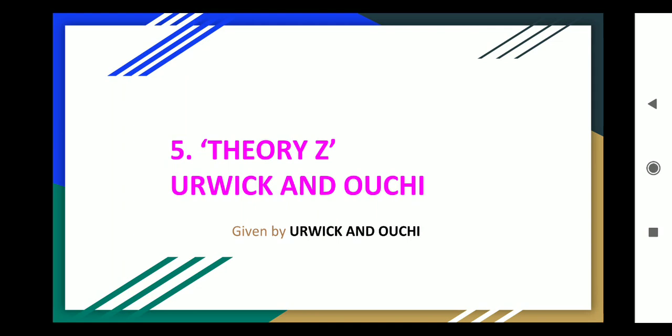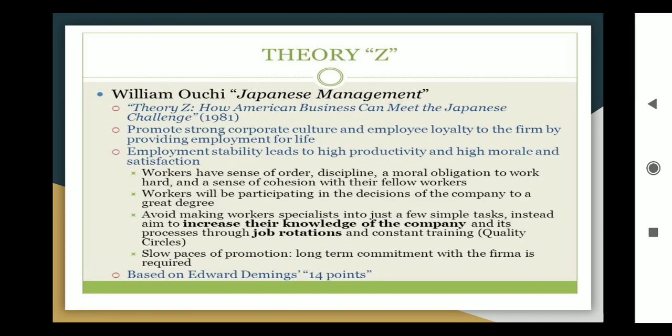Theory Z is just a name — it does not carry a specific meaning of 'Z'. Ouchi, meaning William Ouchi, compared both Japanese management and American management. He gave his Theory Z describing how American business can meet the Japanese challenge. It was published in 1981.